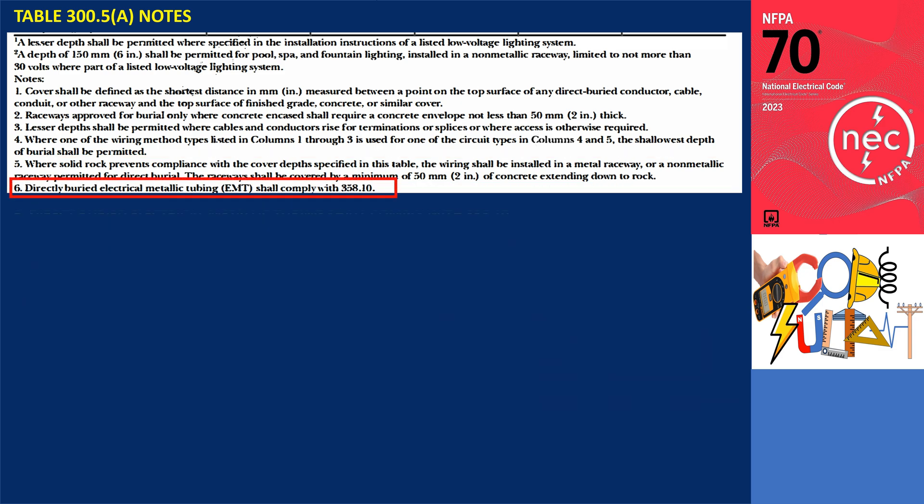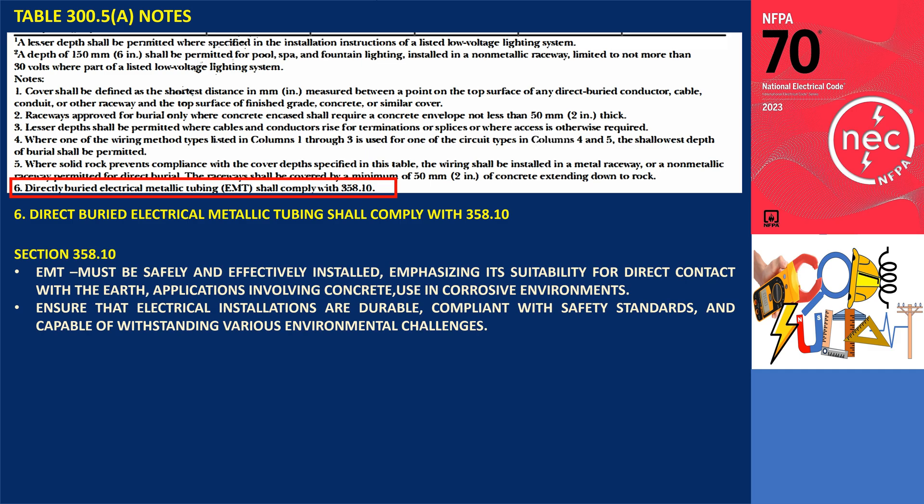Note 6: Direct buried electrical metallic tubing shall comply with Section 358.10. Section 358.10 defines conditions under which EMT can be safely installed, emphasizing its suitability for direct contact with the earth, applications involving concrete, and use in corrosive environments. These guidelines help ensure that electrical installations are durable, compliant with safety standards, and capable of withstanding various environmental challenges.